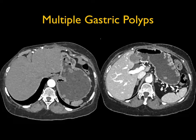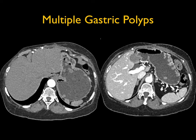Case number one shows multiple gastric polyps. We talk a lot about polyposis and the importance of technique. You need to distend the stomach with 750 cc's of water. I like water better than positive contrast, particularly when looking for subtle masses in the stomach. You also want to use IV contrast. Polyps can be seen in the stomach as incidental findings, but when you see multiple polyps, you think of polyposis syndrome, whether it's FAP or Gardner's or something else.